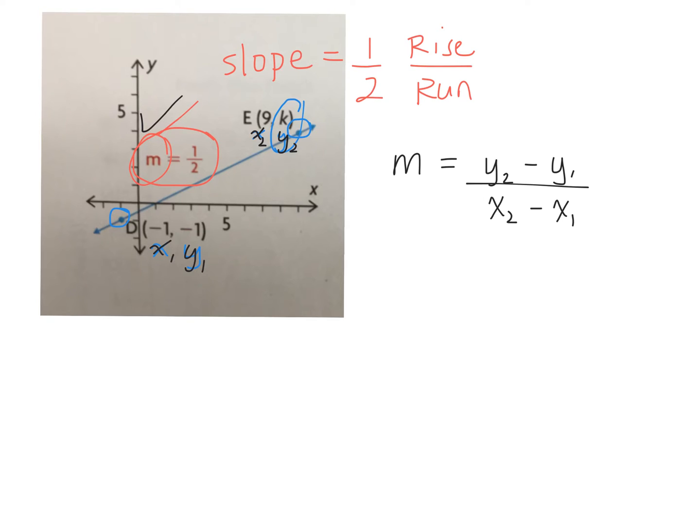We know what M represents. We know that the slope of this line is 1 over 2. So instead of writing M, I'm going to write 1 over 2. That's M. That's the slope, right? Okay, so slope is equal to, well, what did I label as Y2? What's my Y2 coordinate?